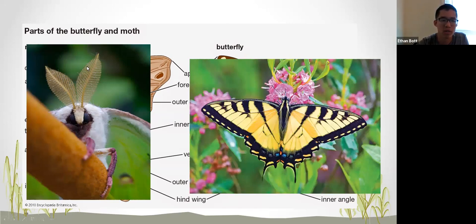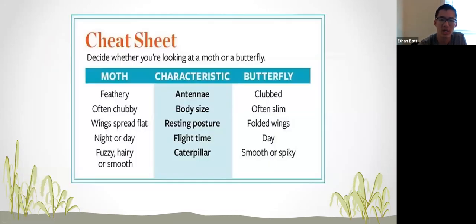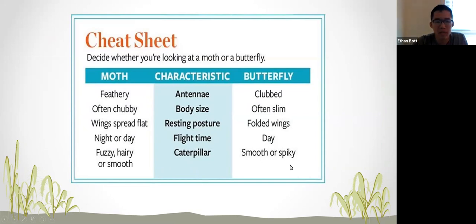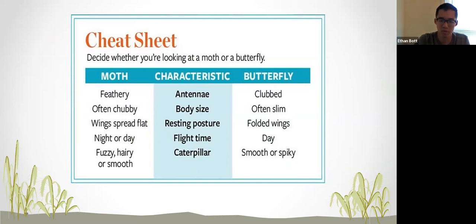You can get a better view of the differences between a moth and a butterfly here — I think that's actually a luna moth on the left, which is super cool. Other differences include caterpillars: moth caterpillars are fuzzy, hairy, or smooth, while butterfly caterpillars are smooth and spiky. Body size also differs between butterflies and moths.